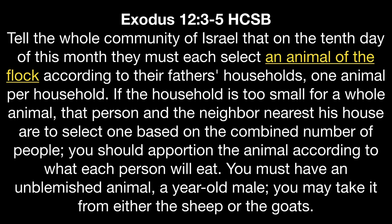The animal was to be an animal of the flock. Some translations say lamb here, but the Hebrew word is seh, S-E-H, and it is broader than just sheep. The Hebrew word refers to smaller flock animals, and that word seh can be used for a sheep or a goat and also for a male or a female. This is why a few verses later the instruction in verse 5 is to take the animal from either the sheep or the goats, and it says the animal must be male.